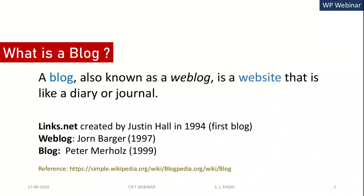So what is a blog? A blog, also known as a web blog, is a website that is like a diary or journal. The contents are just like in a diary or journal. The first blog, which was an online diary, was created by Justin Hall in 1994.